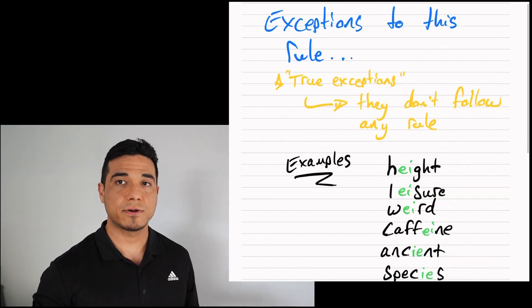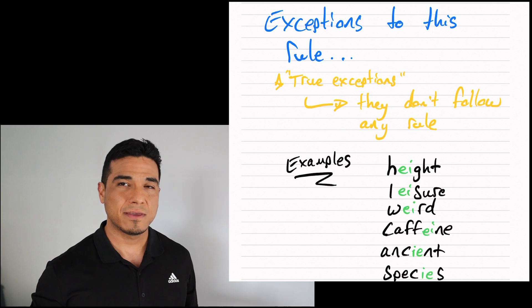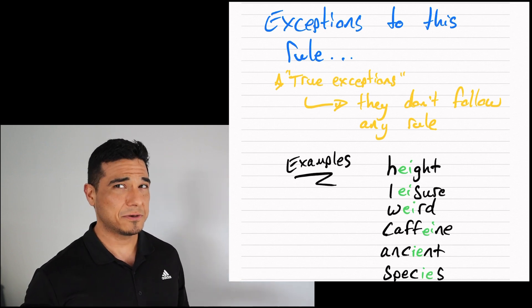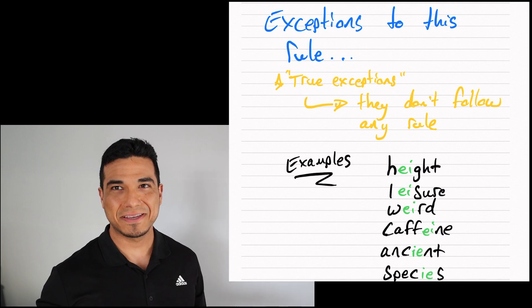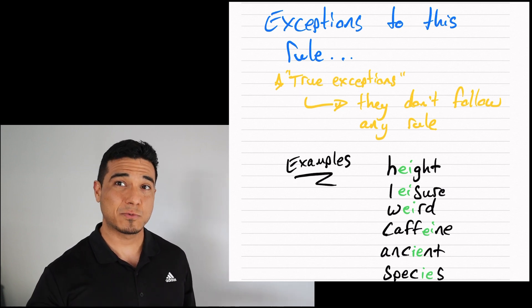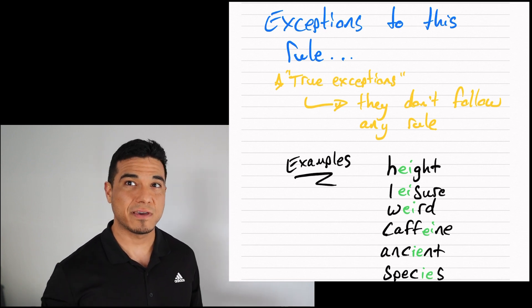Following examples I give you are what are known as true exceptions, meaning they don't adhere or follow any particular rule. They have their own rules. I know you're going to have to commit these to memory, especially moving forward, because these words are pretty commonly used and you will need to know how to spell them. So I do encourage you to make flashcards if you haven't already.